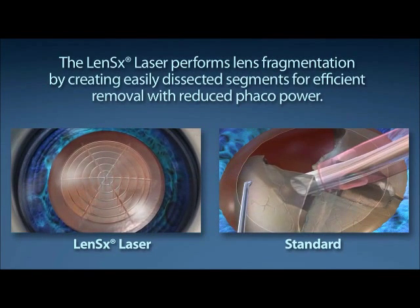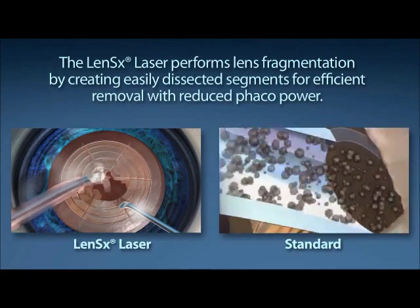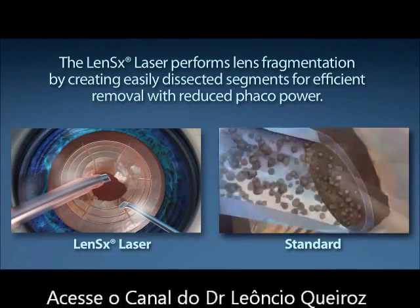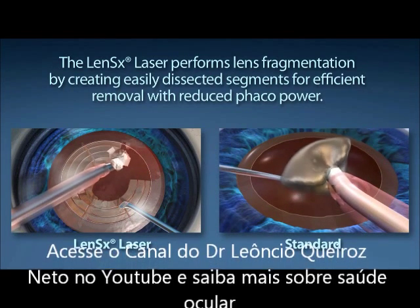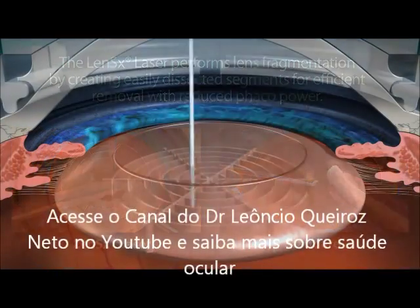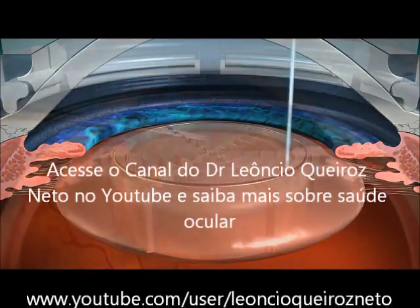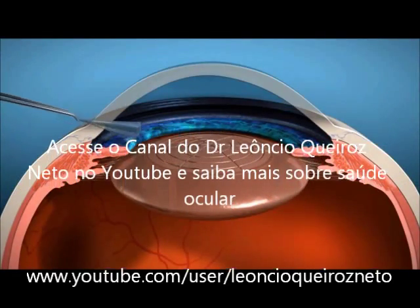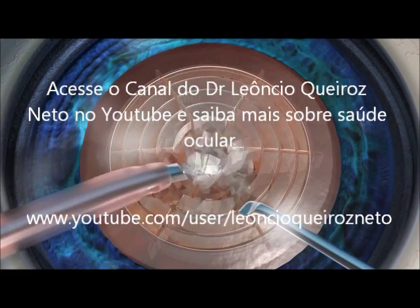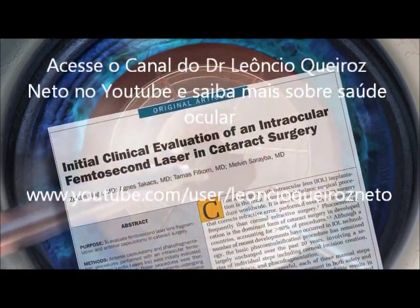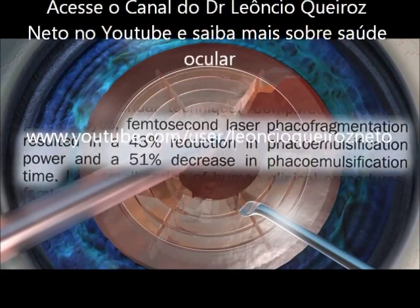Standard cataract surgery requires a phaco emulsification machine to segment and remove the content of the cataract. The goal of your surgeon is to reduce the amount of phaco energy used to remove your cataract. The LensX laser performs lens fragmentation, creating easily dissected segments for efficient removal with little or no phaco power. With the laser pulses utilized, the LensX laser provides the surgeon a 43% reduction in phaco power and a 51% reduction in phaco time.